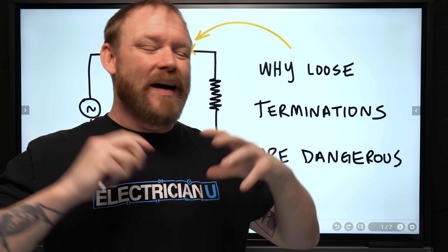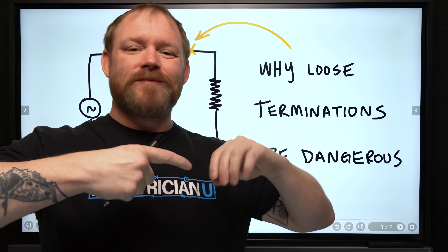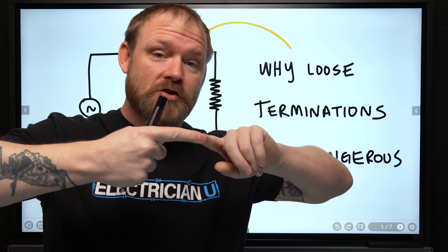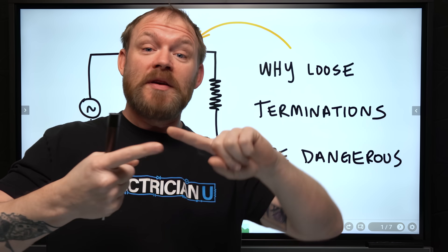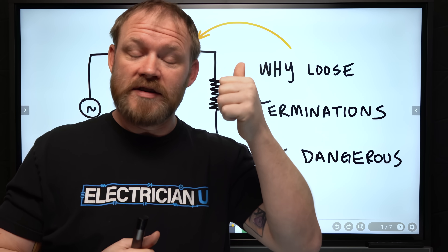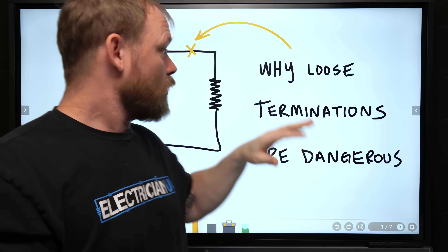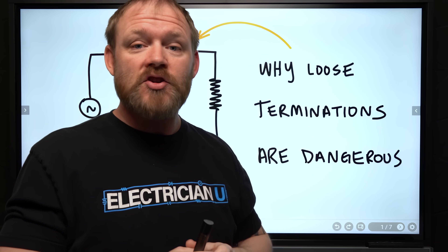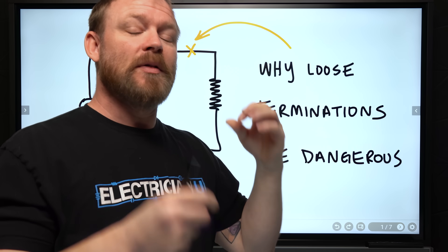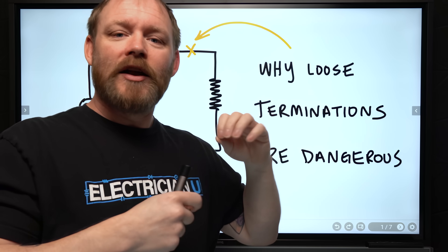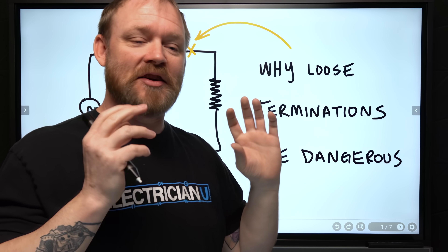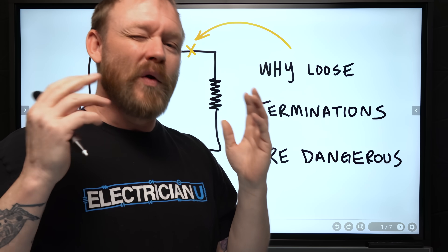If you have a failure point in a circuit — like a termination, a wire nut that comes a little bit loose — it's losing its connection, which means compared to a solid connection, there's less contact, which ends up being more resistance and less current flow. When we have a high-resistance termination, we have a whole bunch of heat that builds up. But the graph of how this works would actually surprise you.